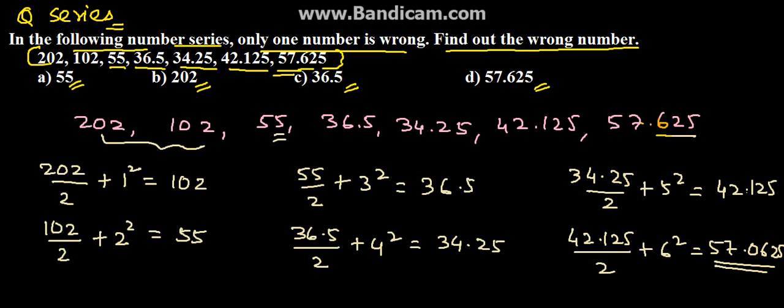But in this series, we see 57.625. That means 0 is missing after the decimal point. Therefore, option D, that is 57.625, is the wrong number in the series, which is the solution for the given problem. Thank you.